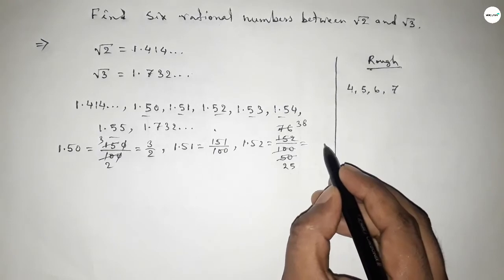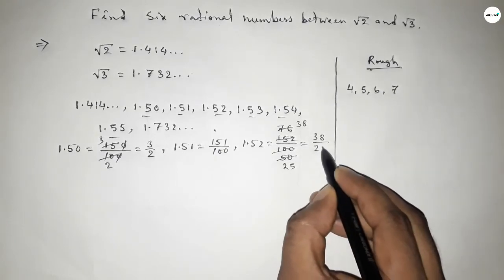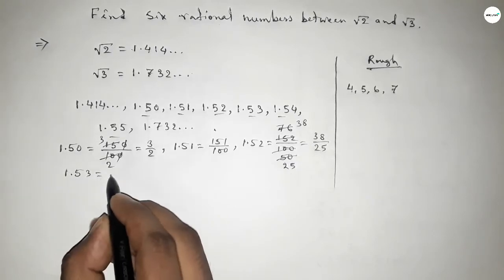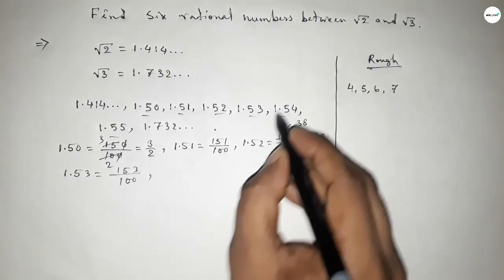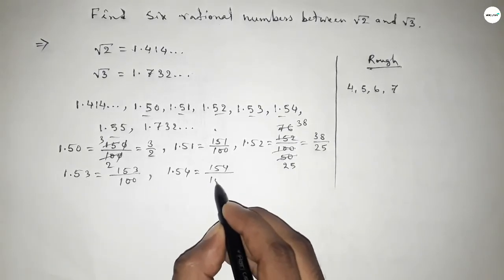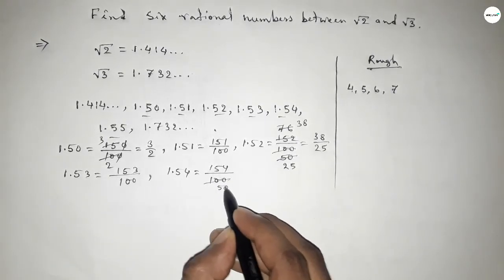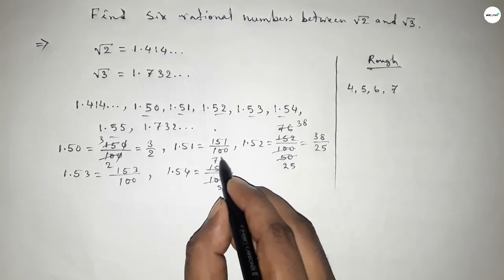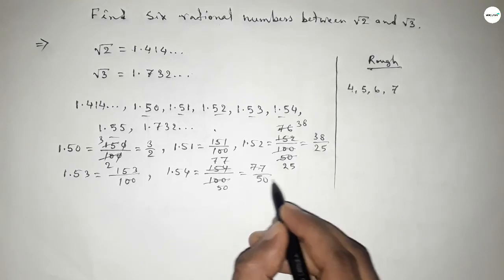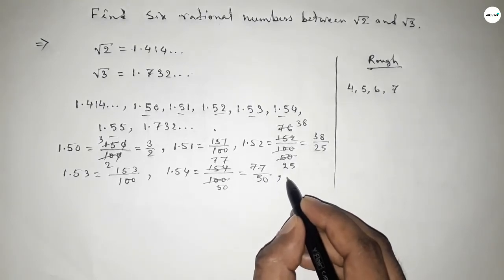Next, 1.53, so 153 over 100. And 1.54 equals 154 over 100. Both numbers divided by two, so this is 77 over 50.